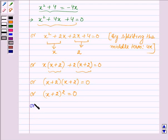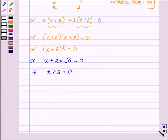This implies x plus 2 equals the square root of 0, which is 0. So x plus 2 equals 0, which means x equals minus 2.